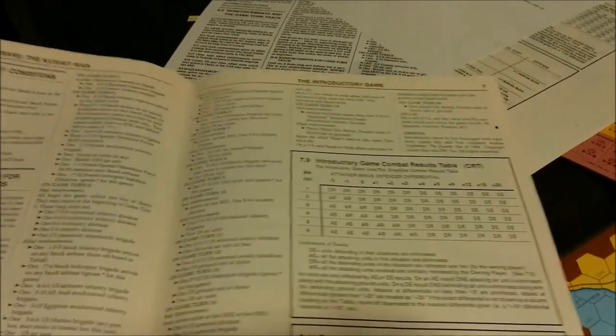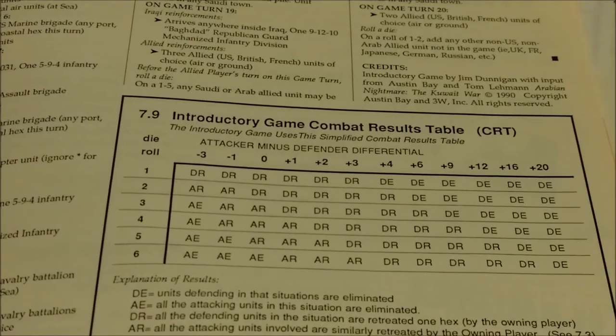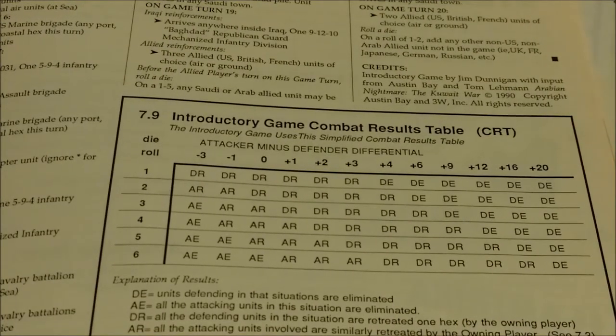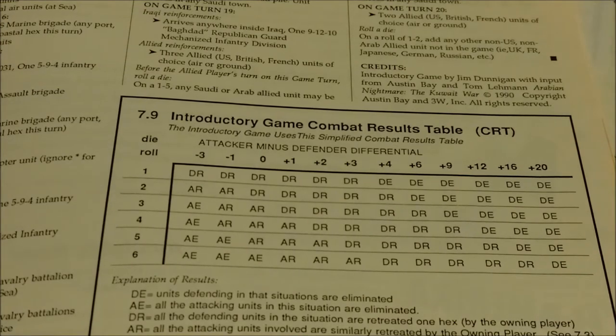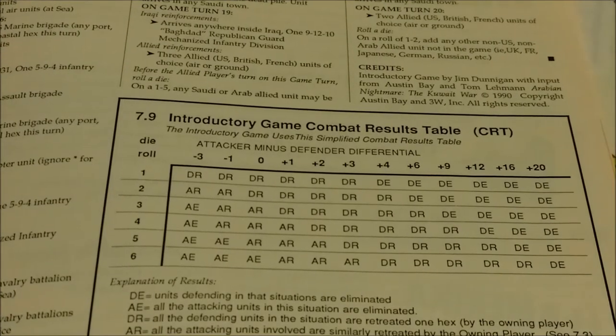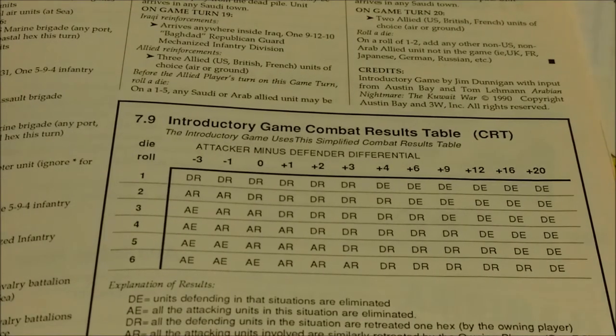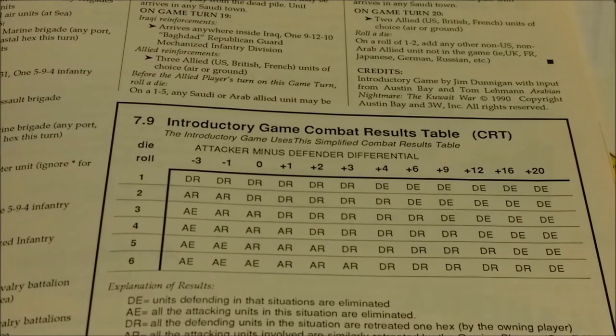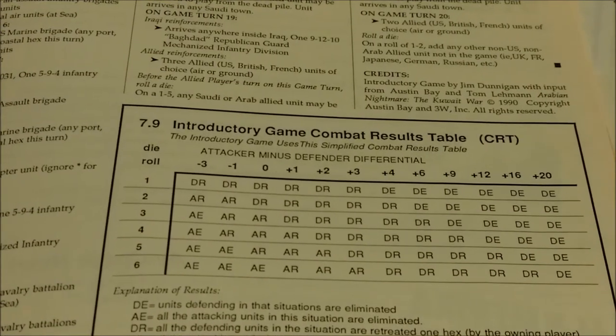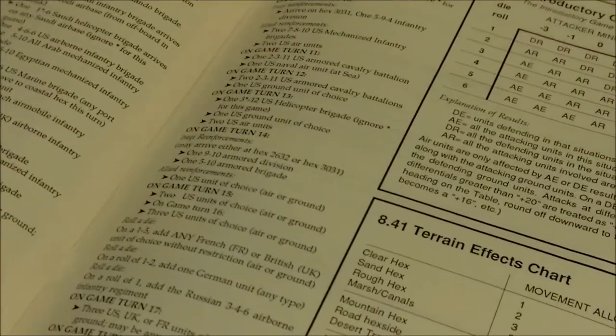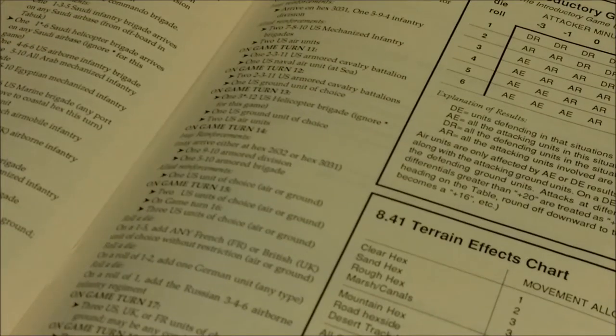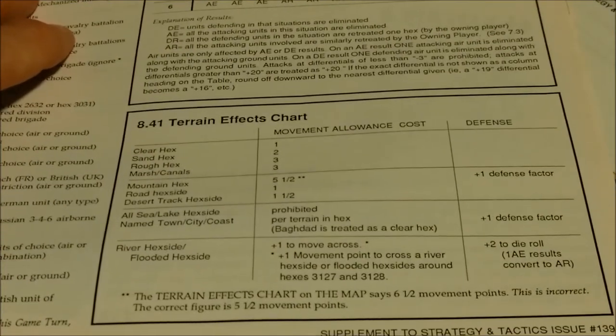Combat results table. Fairly simplistic. It uses a differential system. Other than shifting left or right due to air power, you pretty much just roll a die on the differential column, and you'll come up with defender eliminated, attacker eliminated, defender retreat, or attacker retreat. You can advance after combat, I think with 2 units from the attacking side only. And then we have a terrain effects chart, which is pretty simple in the introductory game. And that's basically all there is to it.